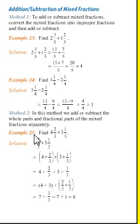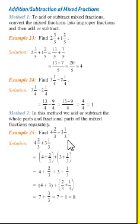Now we'll see Method 2. In this method, we add or subtract the whole parts and fractional parts of the mixed fraction separately. Here, we solve the whole parts separately and the fractional parts separately. See Example 25: 4 whole 2 divided by 3 plus 3 whole 1 divided by 3.